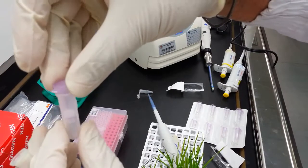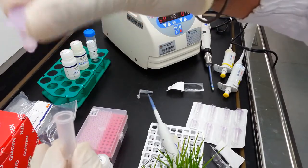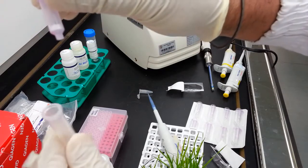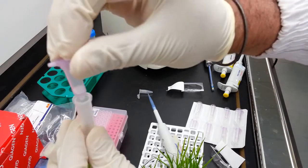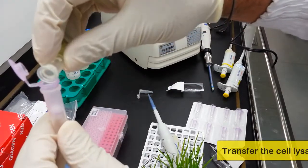The column consists of two sections. The upper section which is purple and contains the cartridge and the lower section which is essentially a collection tube. Transfer this lysate into the upper column.